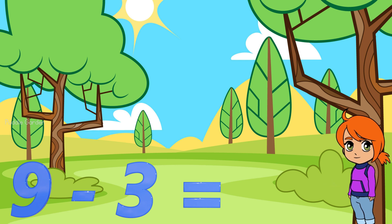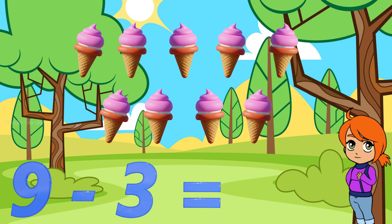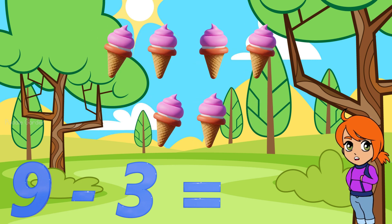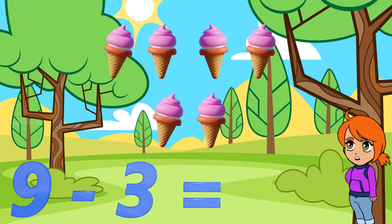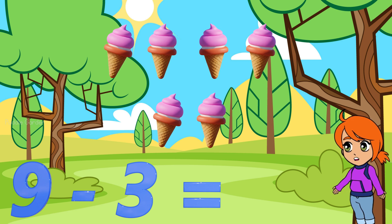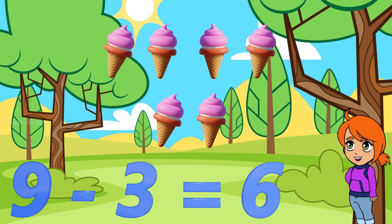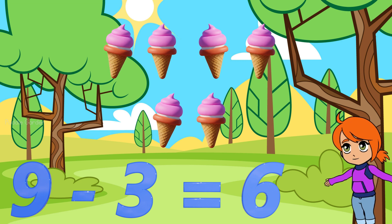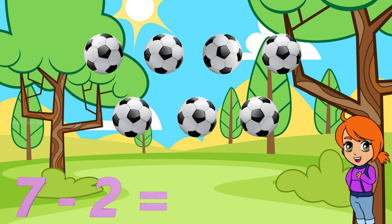Let's get started. If we have 9 and we want to take away 3, how many are left? We had 9 and we took away 3 — we have 1, 2, 3, 4, 5, 6. There are 6 left. So 9 take away 3 equals 6.